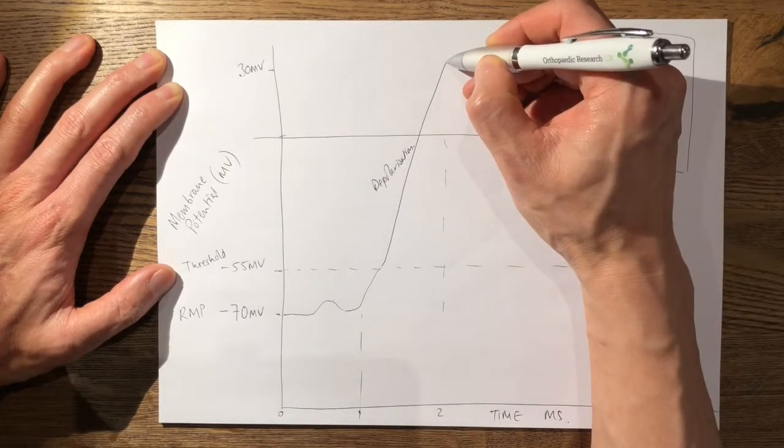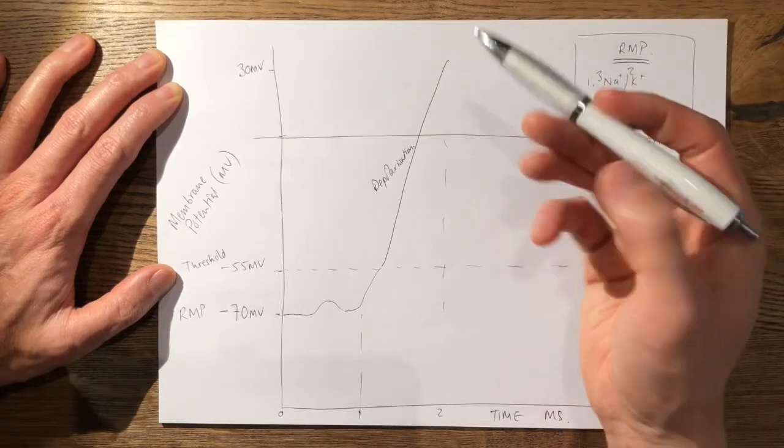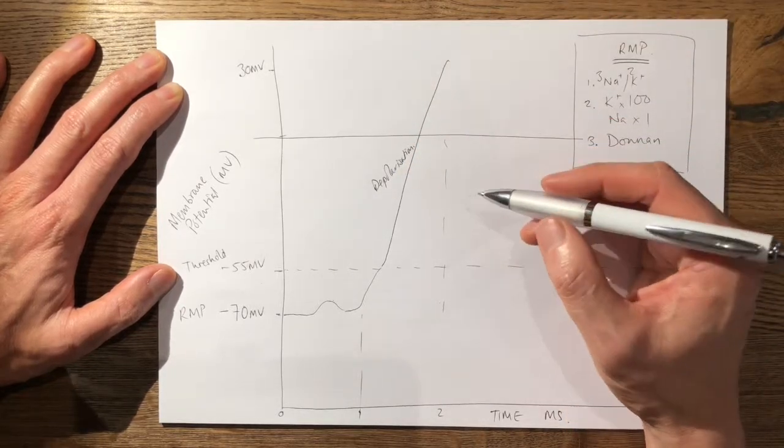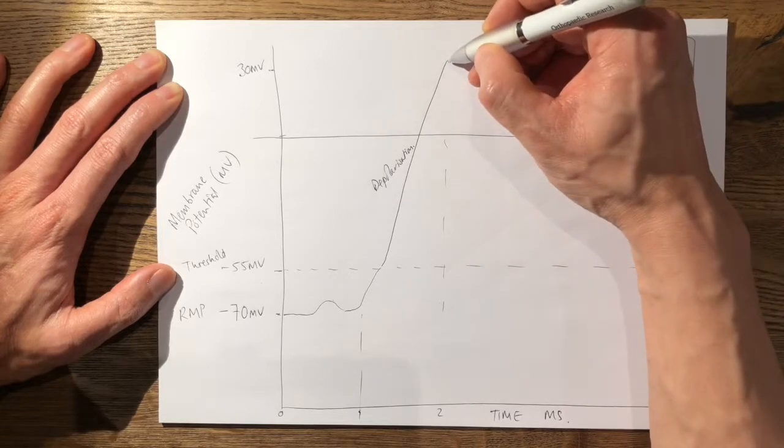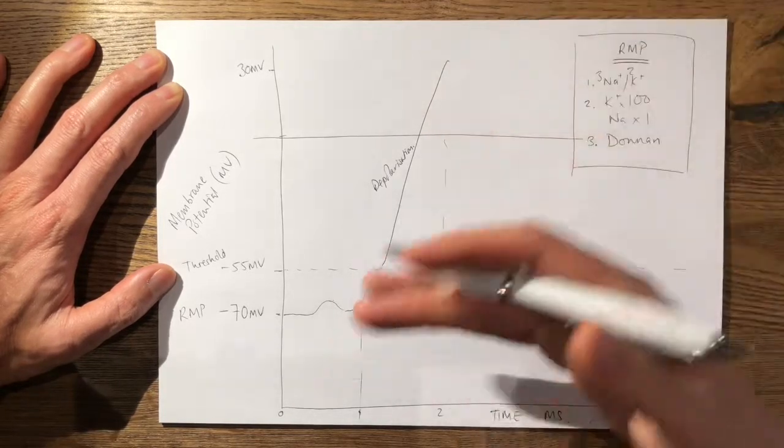So at this point when the sodium channels close, at the same time, the potassium channels open. So when the potassium channels open, you get a massive efflux of potassium.